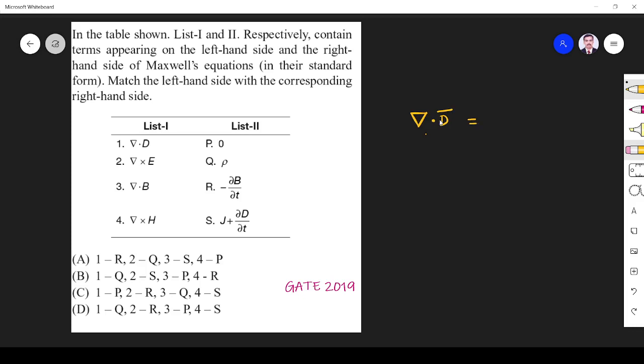First one is ∇·D. ∇·D is equal to ρv, this is Gauss law for electric field, so that must be equal to ρv, so 1 is Q. Next one, ∇×E, curl of electric field. We know curl of electric field is 0, that is why it is called a conservative field, so this means 2 is P.